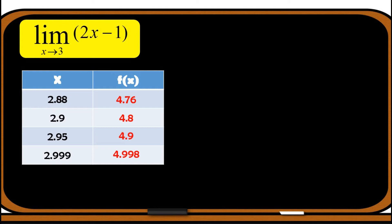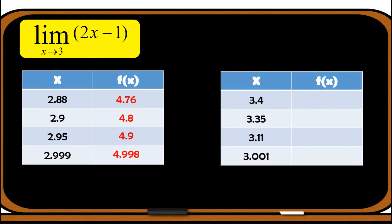Now let us consider approaching 3 from its right, or through values greater than but close to 3. So we have this table of values. The values of x are 3.4, 3.35, 3.11, and 3.001. Again, you may choose any values as long as they are close to 3. So when x is 3.4, the value of f(x) is 5.8. When x is 3.35, it is 5.7. When x is 3.11, it is 5.22. When x is 3.001, it is 5.002.